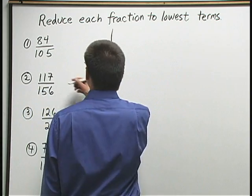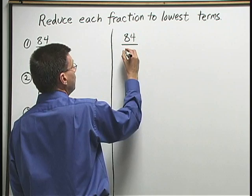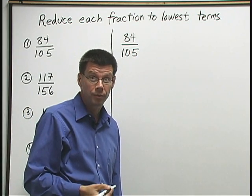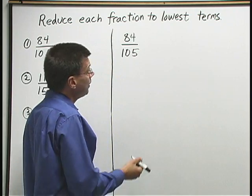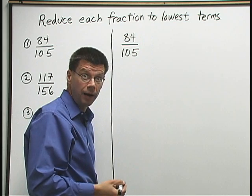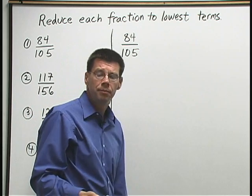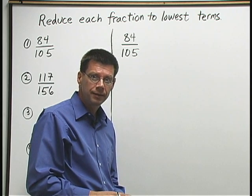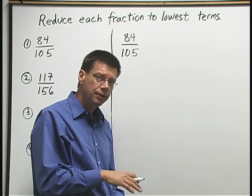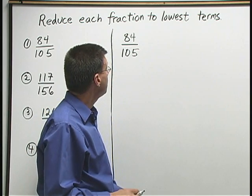Our first fraction is 84 over 105. We want to reduce this fraction to lowest terms. To get started, I need to break down 84 and 105 using multiplication. Now, I don't remember 84 from my multiplication facts, but if I can find a number that I can divide into 84 without remainder, that will help me get started.